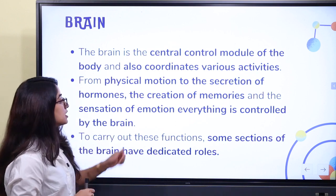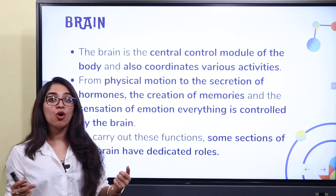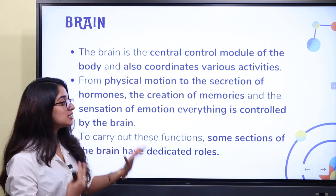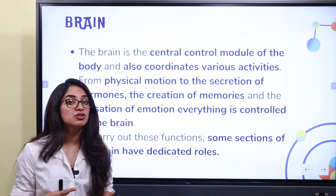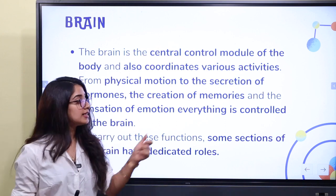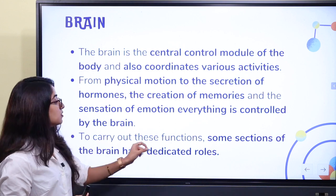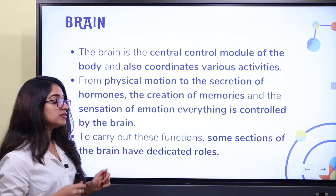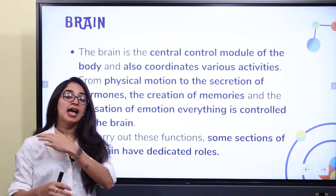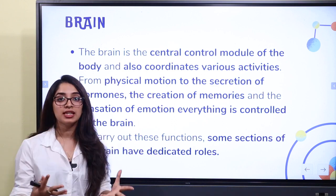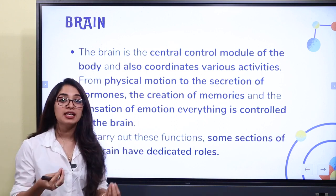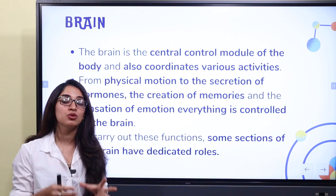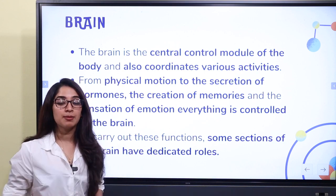Everything from physical motion to the secretion of hormones, the creation of memories, and the sensation of emotion is controlled by the brain. Some sections of the brain have dedicated roles, so the brain is further divided into smaller sections which control these specific tasks.